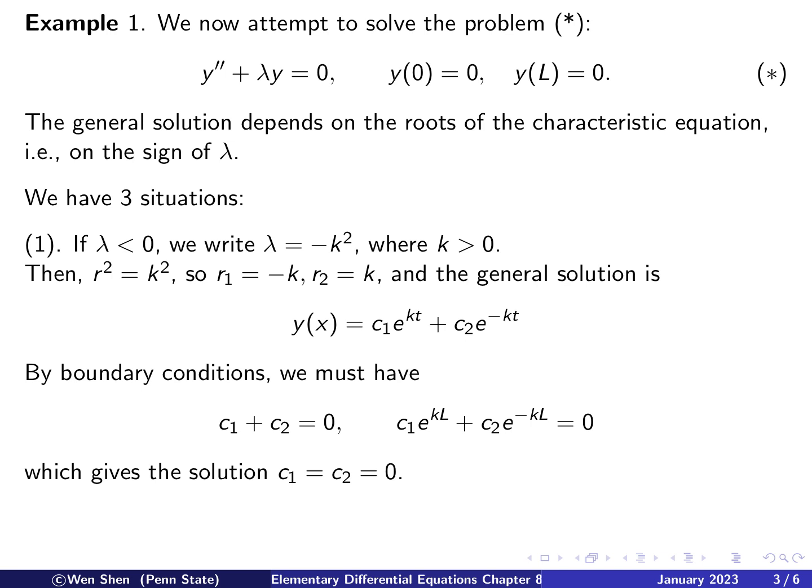Next step is to use the two given boundary conditions to determine the constants c₁ and c₂. So if we put that in, y(0) = 0, then e⁰ = 1. We have c₁ + c₂ = 0. I'm sorry, there's a typo. This shall be x, not t. That's my variable. And the second boundary condition is y(L) = 0. And then we put L here, and we have c₁e^(kL) + c₂e^(-kL) = 0. And here we need to remember the condition k is strictly bigger than 0.